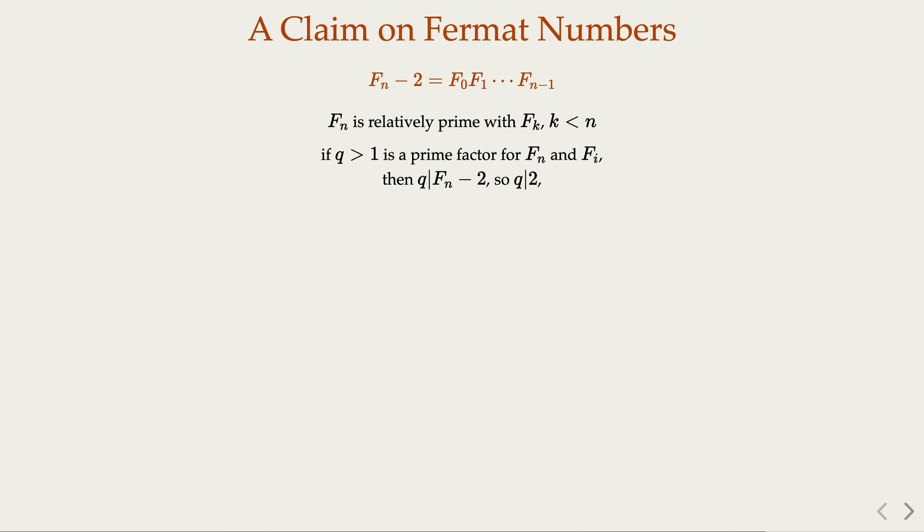But since q divides Fn, so we conclude that q must divide 2. Now if q is greater than 1, q has only one prime factor, which is 2, so q has to be 2.